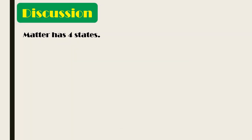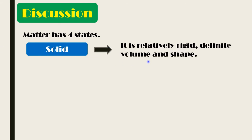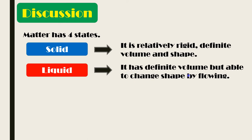Matter has four states, also called four phases of matter. We all know there are three, but there is actually a fourth. The first state is solid — it has a relatively rigid, definite volume and shape. Examples include rocks, ball pens, pens, matches, face masks, and gloves.